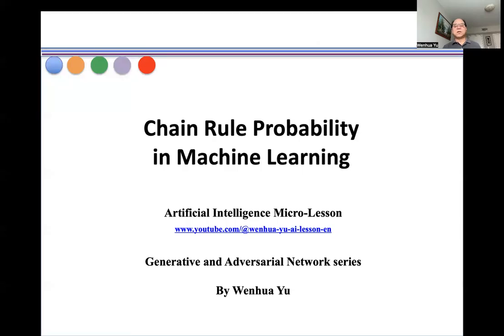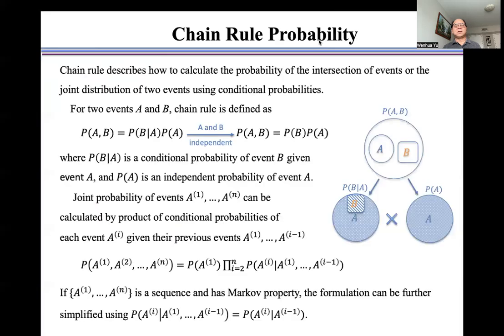In this video, I introduce the chain rule probability in machine learning. Chain rule describes how to calculate the probability of the intersection of events or the joint distribution of two events using conditional probabilities.